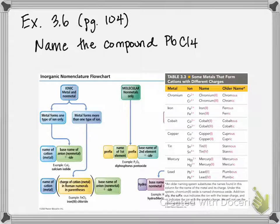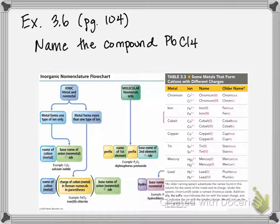This is example 3.6 on page 104 of our textbooks, and here they're asking us to name the compound PbCl4. Before we start naming anything, we need to make sure we recognize what type of compound it is.